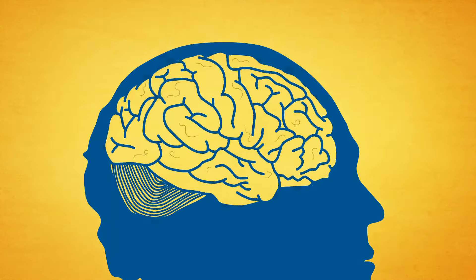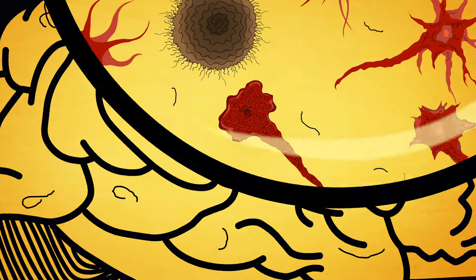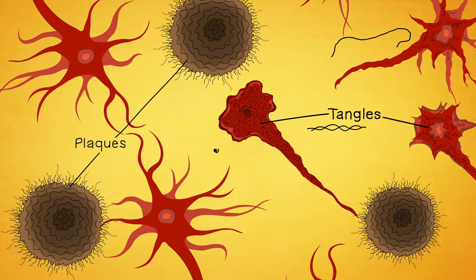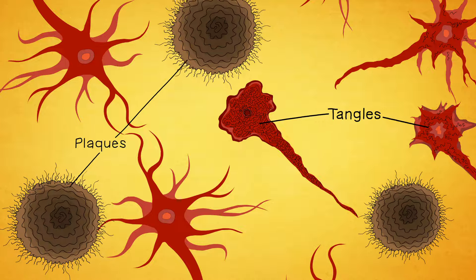The disease comes on gradually as two abnormal protein fragments, called plaques and tangles, accumulate in the brain and kill brain cells.